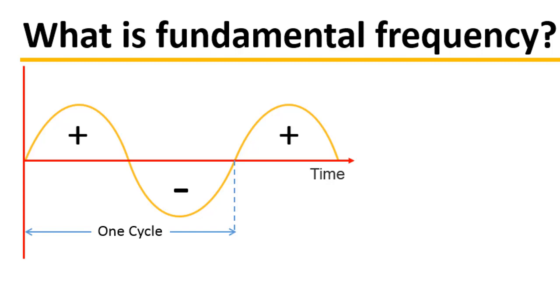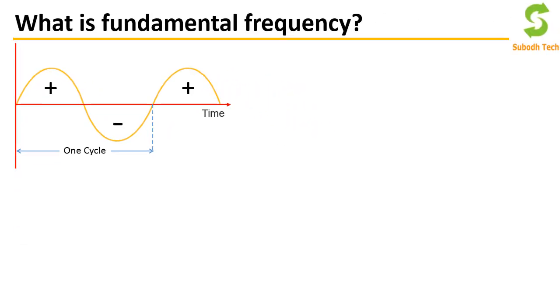For example, in India the power supply frequency is 50 hertz, it means that 50 cycles are completed by the waveform in one second. In the US it is 60 hertz, so 60 such cycles are completed in one second.